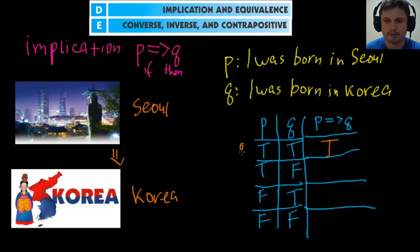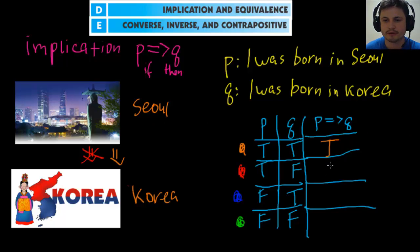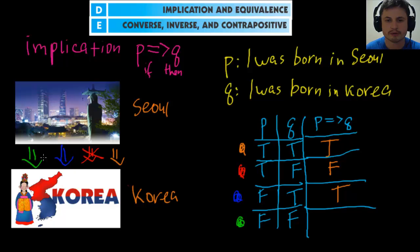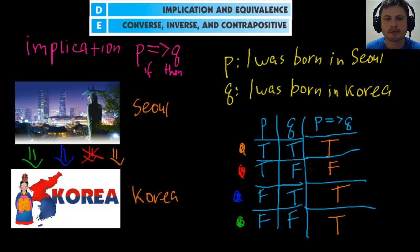Possibility three: I was not born in Seoul but I was born in Korea — sure, I could have been born in Busan or Daejeon, so that's true. Possibility four: I was not born in Seoul and not born in Korea — possible, since I could have been born in a different country, so also true. So the implication truth table is: true, false, true, true.